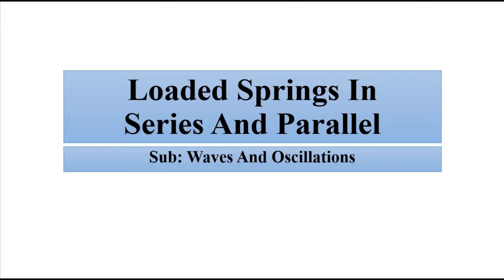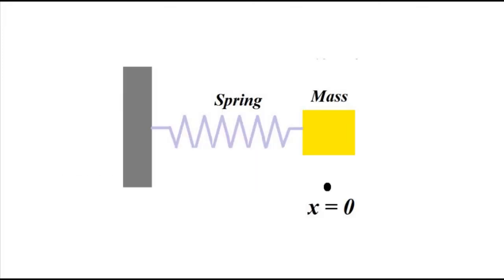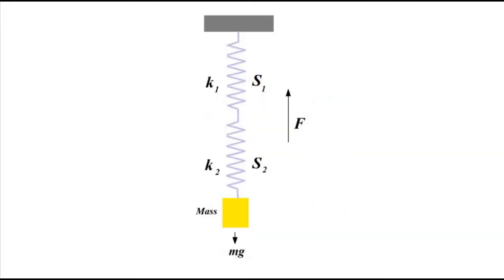In this video, we are going to take that discussion a little bit forward because in that example, we discussed a single spring arrangement — one spring, mass connected to it, its movement, the restoring force, and all other things in horizontal and vertical setup. In this video, we are going to discuss about the two spring arrangement, or multiple springs in general, because in practical situations you will always find that multiple springs are either connected in series or parallel for various purposes.